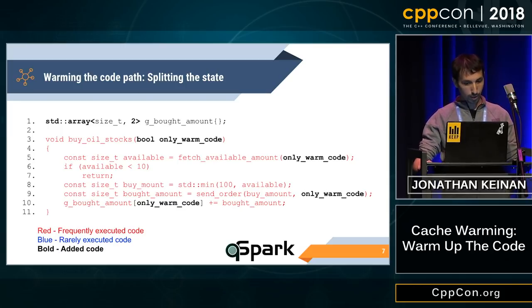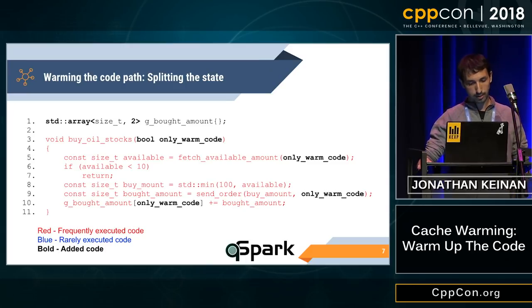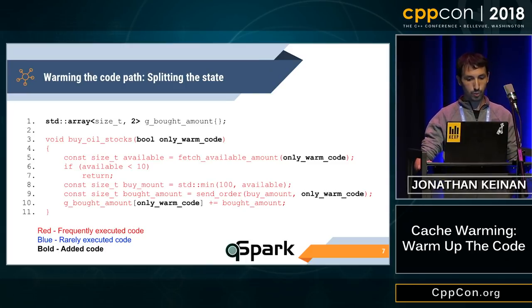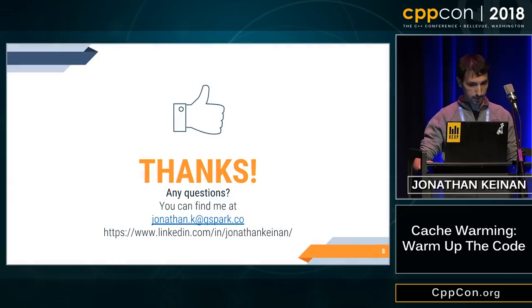If the state could not have been handled that way — if we couldn't have used that technique and we had to use an if — then we would probably need to use a compiler directive, likely or unlikely. That's it. Thank you very much.